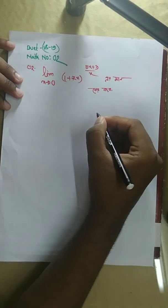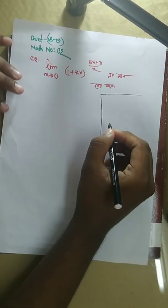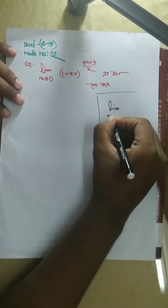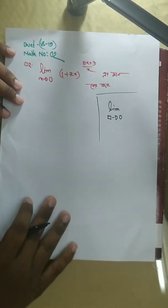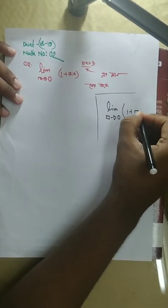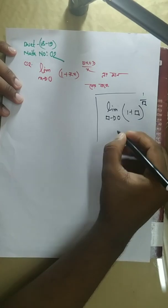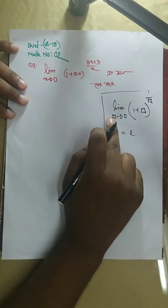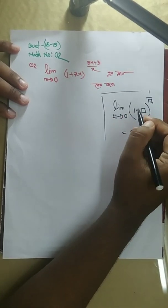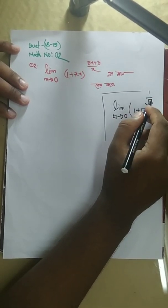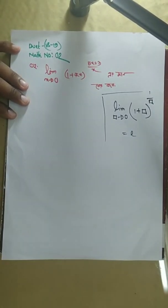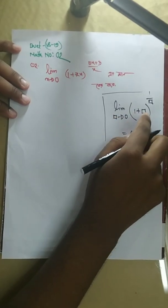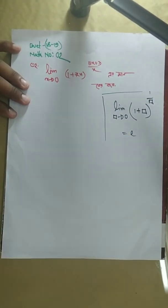We are going to use the first formula. The standard result is: limit as x tends to 0 of (1 plus box) to the power 1 by box equals e. More specifically, limit x tends to 0 of (1 plus 6x) to the power 1 by 6x equals e, and limit x tends to 0 of (1 plus x) to the power 1 by x equals e.